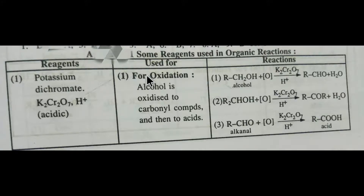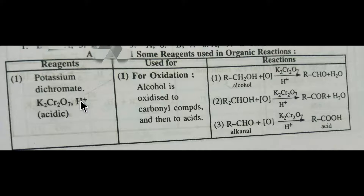Today we are going to learn some reagents that are used in organic reactions. Our first reagent is potassium dichromate in acidic solution. This is the formula for potassium dichromate, and it will be used in an acidic medium.